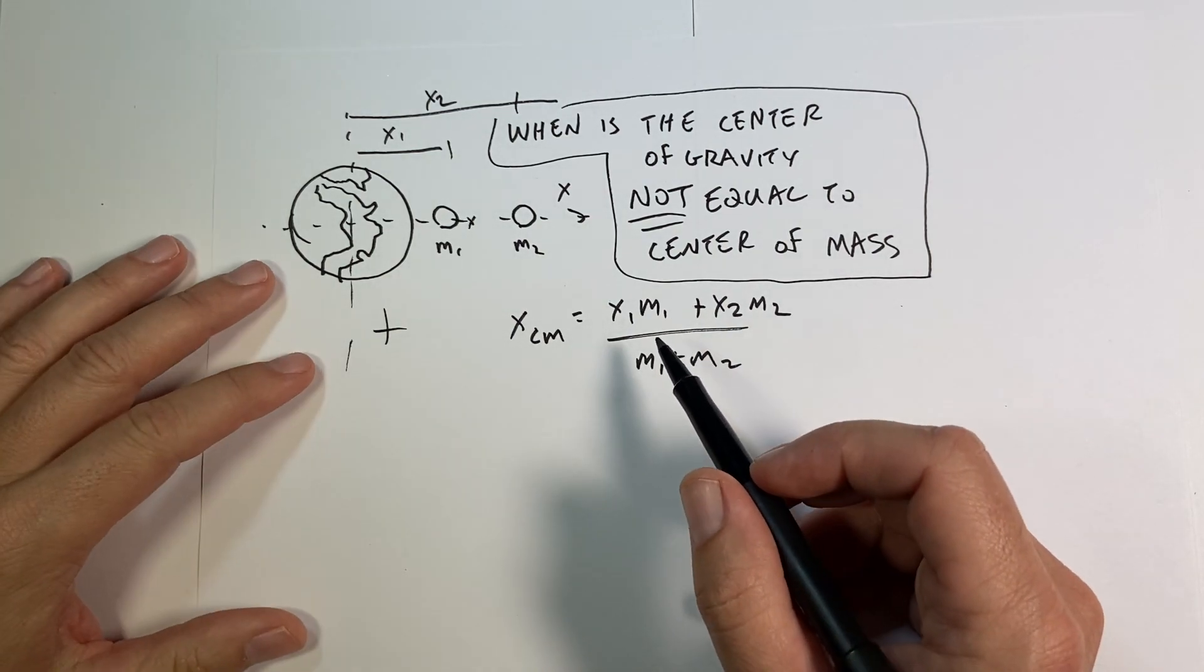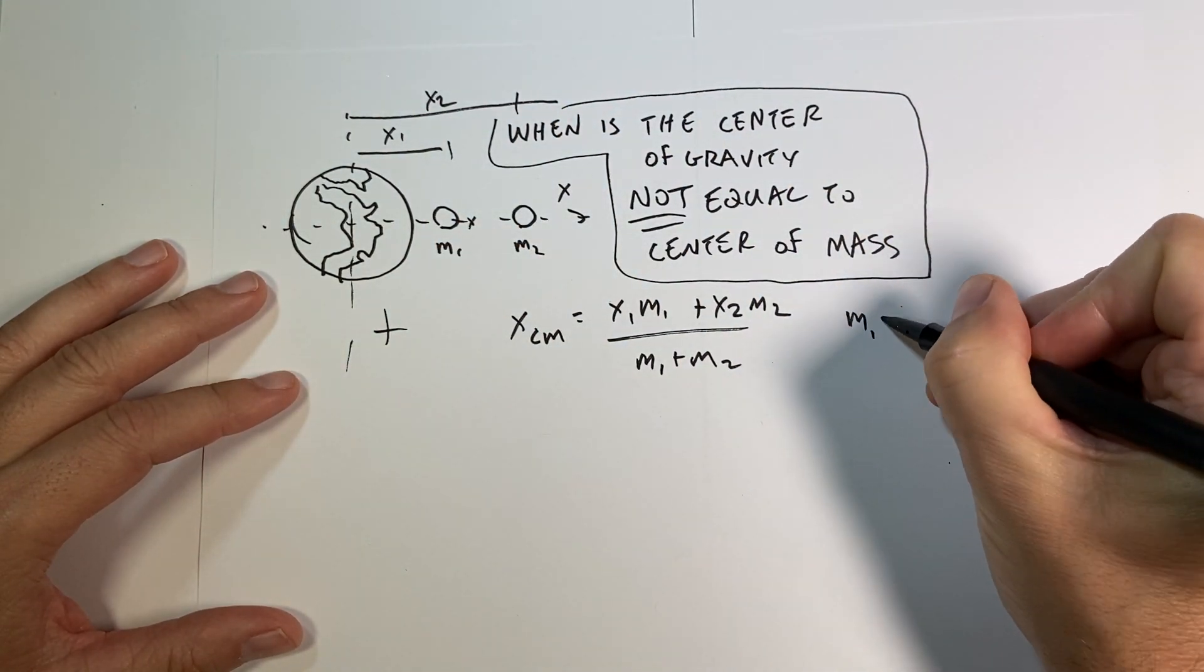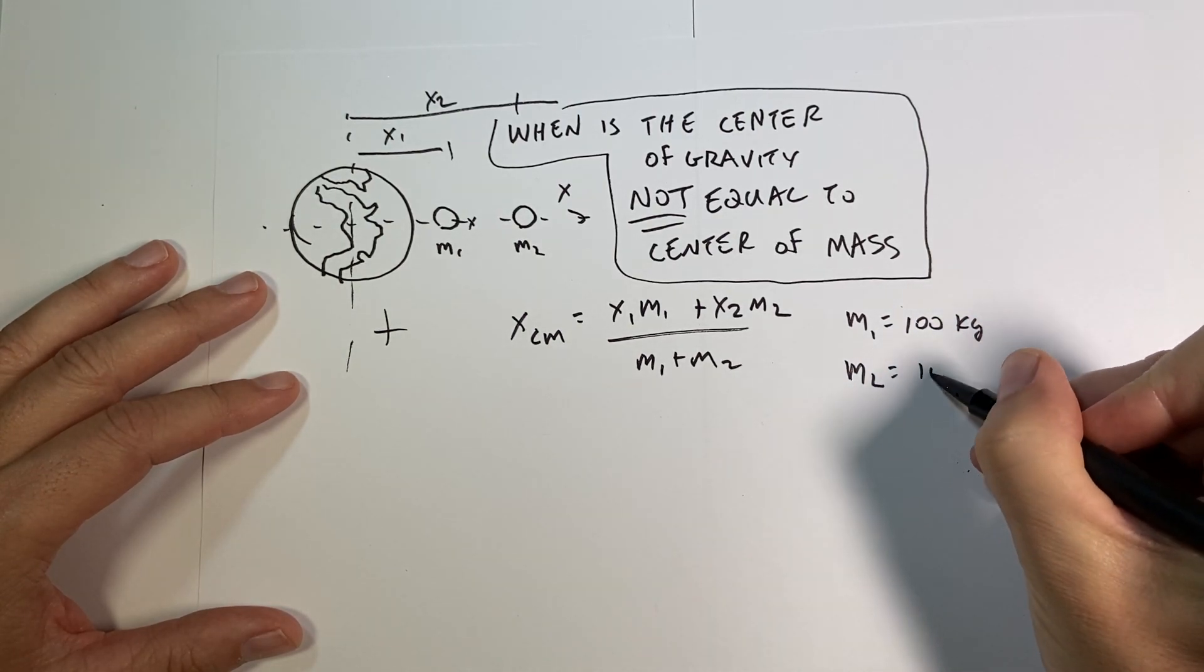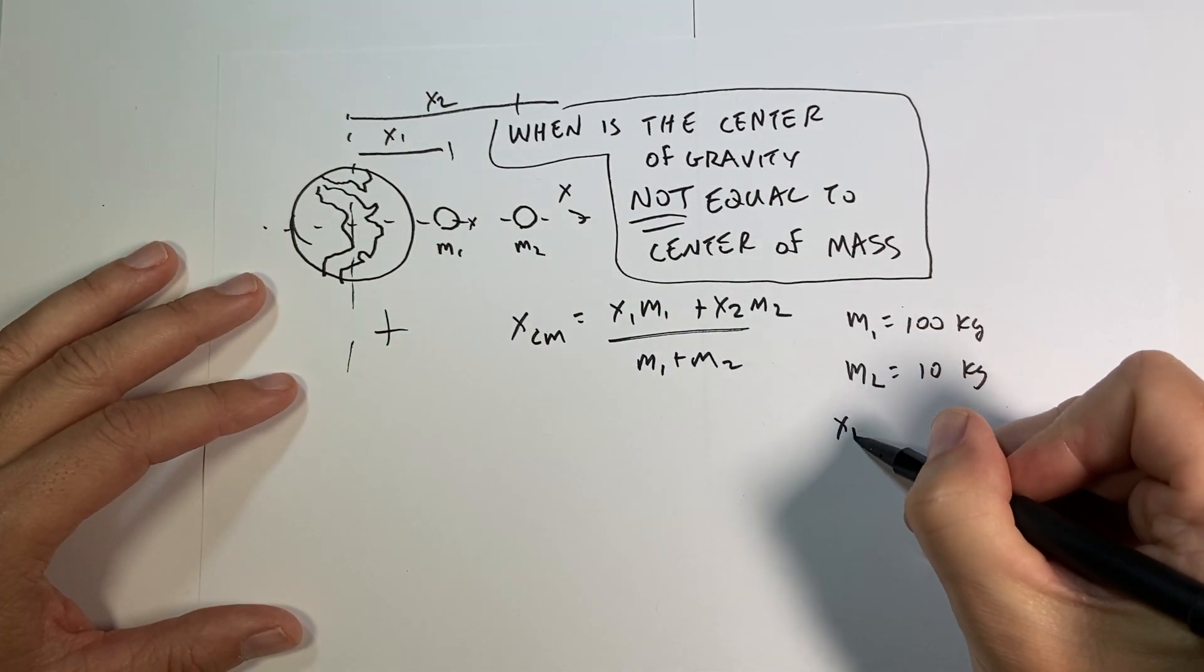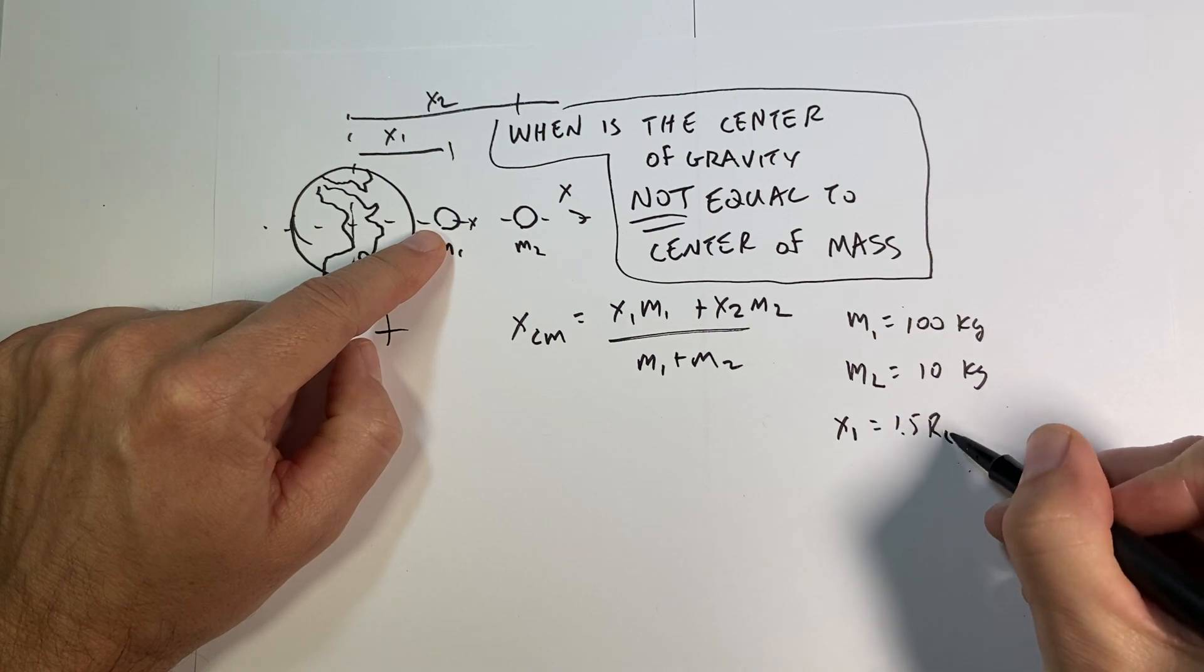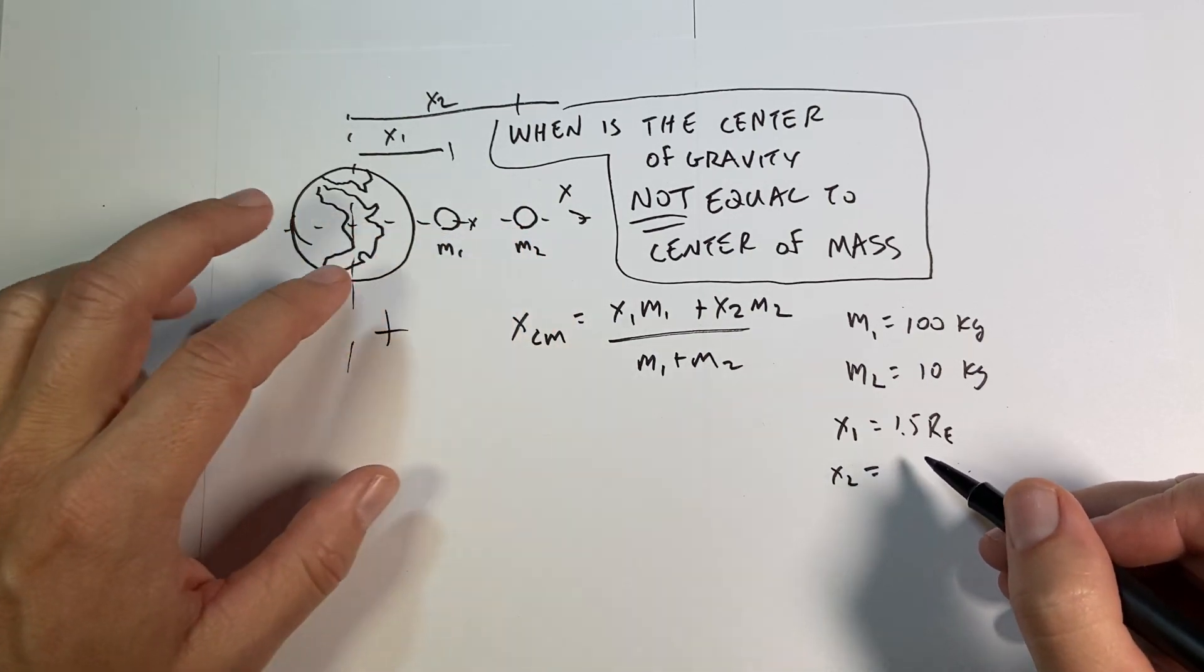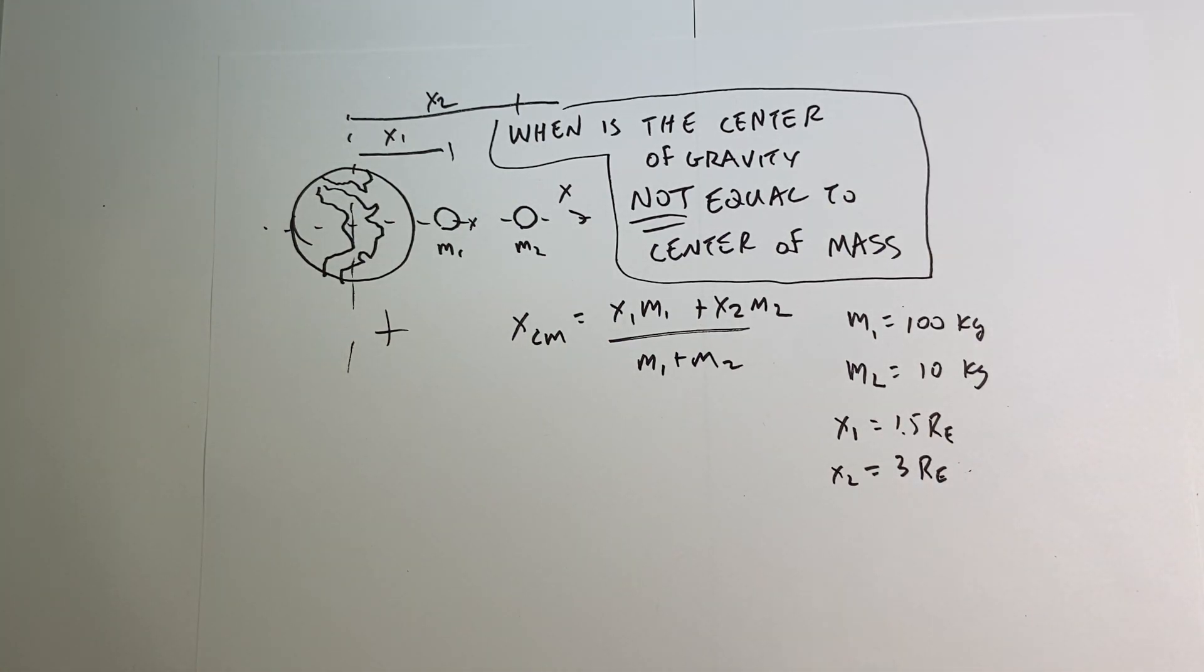That's the center of mass. Here I'm assuming, let's just say m1 equals 100 kilograms and m2 equals 10 kilograms. Let's give some values too: let's say x1 is equal to 1.5 times the radius of the earth, and x2 is equal to 3 times the radius of the earth. I'm giving you some numbers so you can go back and actually calculate this, because I'm probably not going to do that.